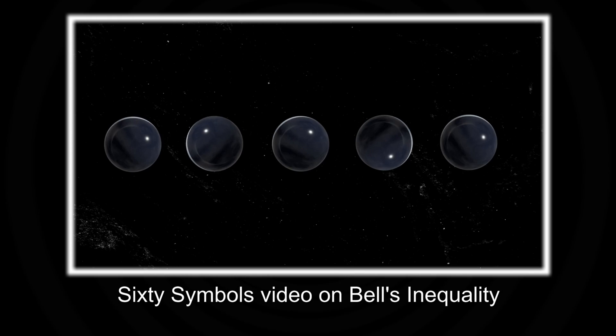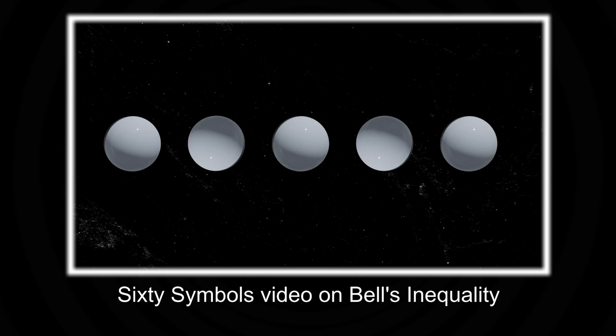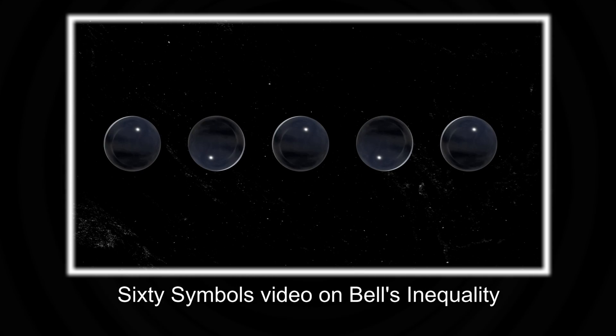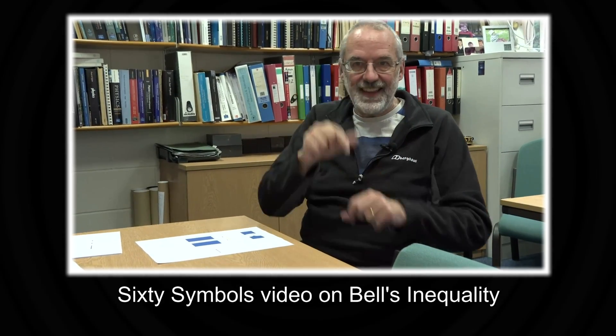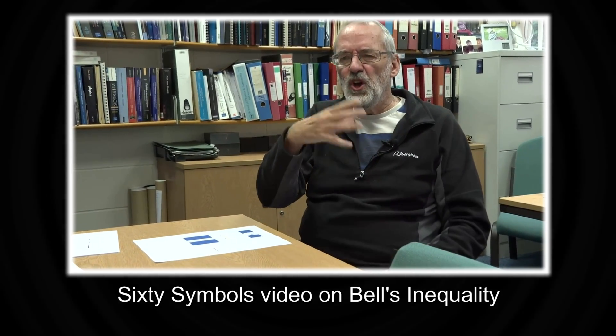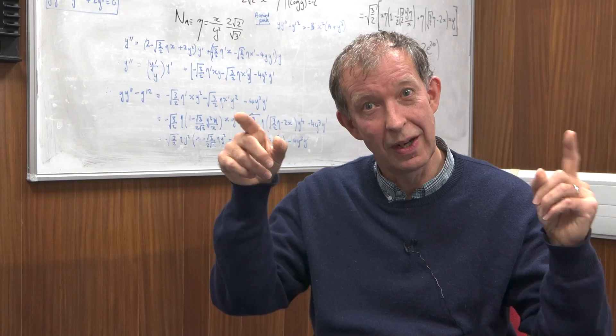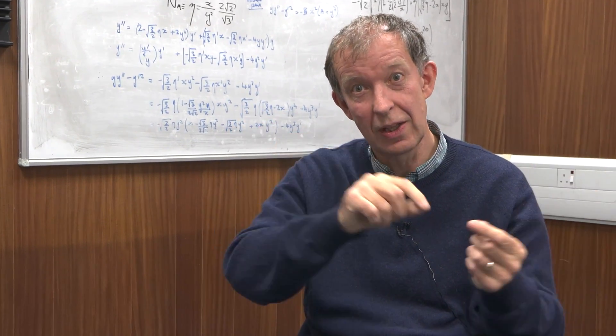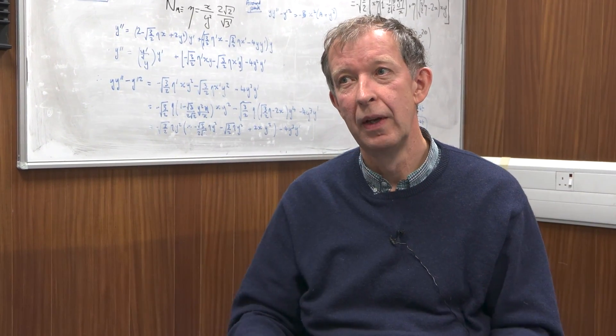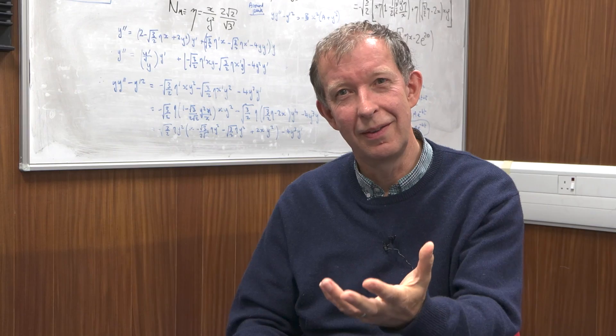And see what they should be in the hidden variables theory and compare them to what they should be in the quantum mechanics case. And he realized, and this is what Mike talks about, there is a bound that emerges in the hidden variables theory that all these correlations have to be less than this given bound. But it's possible in the quantum mechanics case because you can have these extreme correlations that it can be bigger than this bound.